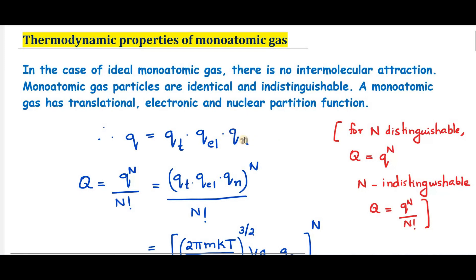Now these monoatomic gas particles are identical and indistinguishable. So for N indistinguishable identical particles, the molar partition function capital Q can be written as q^N / N factorial. So that is equal to (QT × QEL × QN)^N / N!.